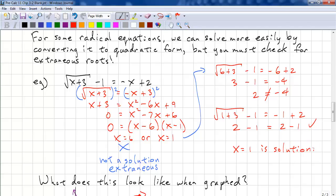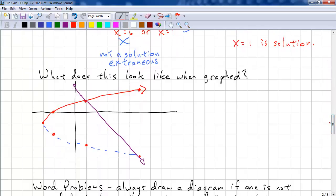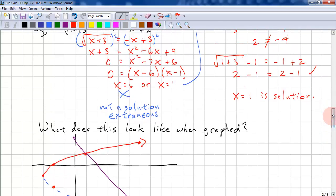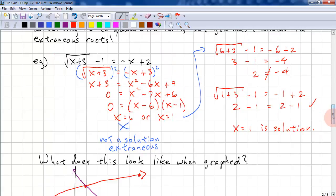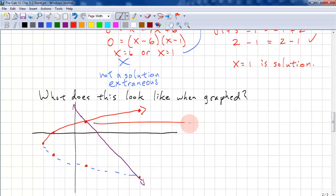So, in order to understand this better, it's easy to look at a graph. Here, we have the line negative x plus 2. Here, we have the radical square root x plus 3 minus 1. It crosses here. This is the other half of the sideways parabola, and they meet here. However, this part of the sideways parabola is not part of the original equation, because we're only looking at the positive part. We would have to have plus or minus to look at both parts of the parabola. So, valid solution. Extraneous solution.